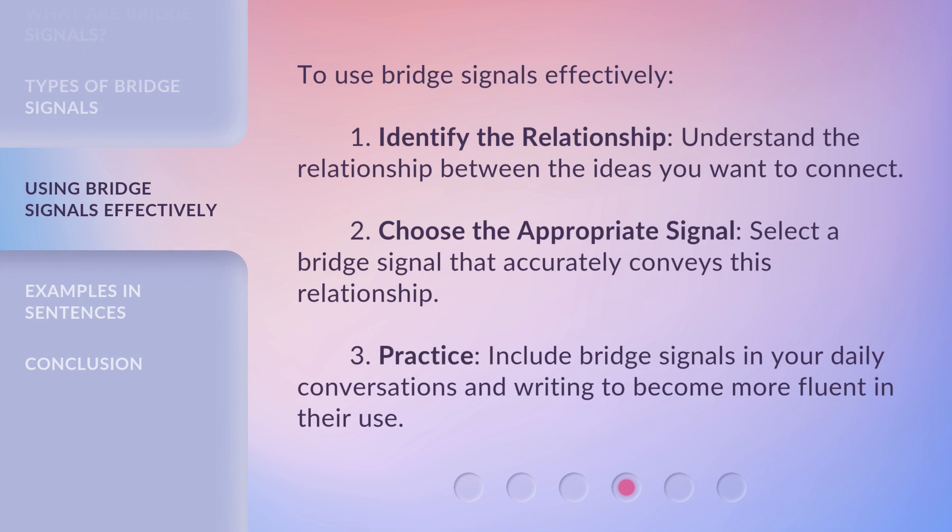To use bridge signals effectively: first, identify the relationship — understand the relationship between the ideas you want to connect. Then, choose the appropriate signal that accurately conveys this relationship. Finally, practice by including bridge signals in your daily conversations and writing to become more fluent in their use.